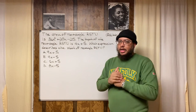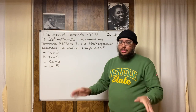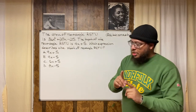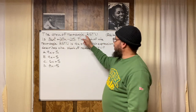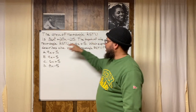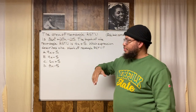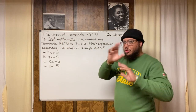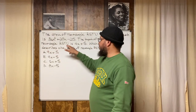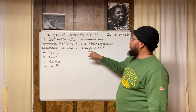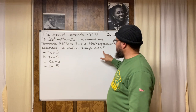Like EPMD said back in the day, you gots to chill. That's the first thing you gotta do. Now we read the problem: the area of rectangle RSTU is 36x² + 25x − 25. The length of rectangle RSTU is 4x + 5. Which expression describes the width of rectangle RSTU? There are four answer choices.